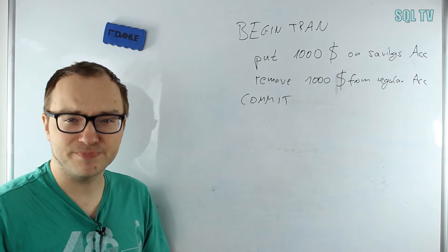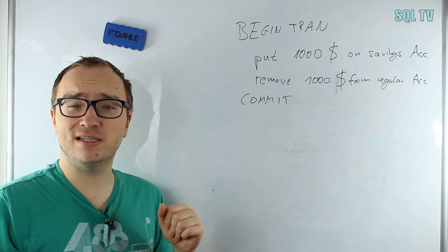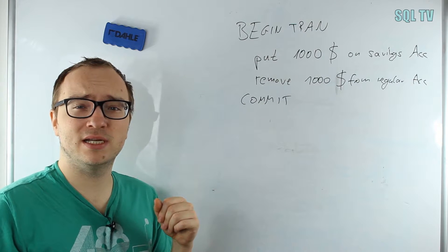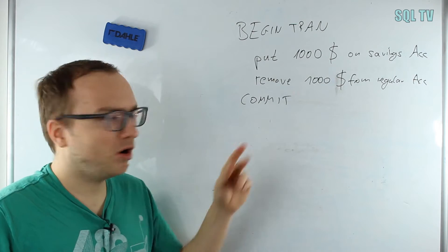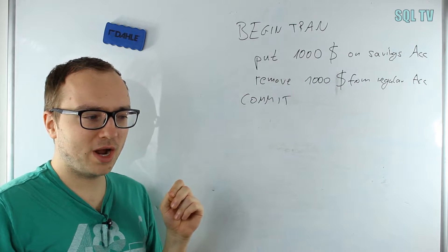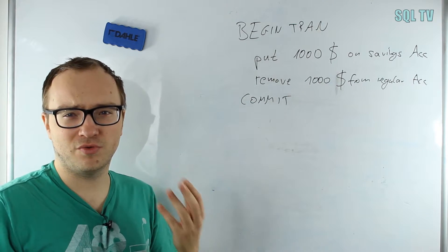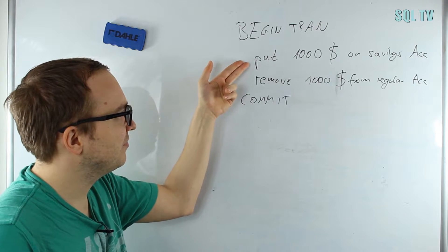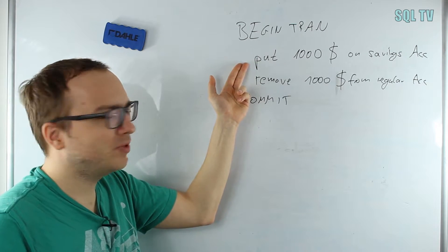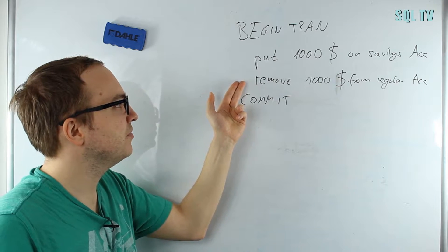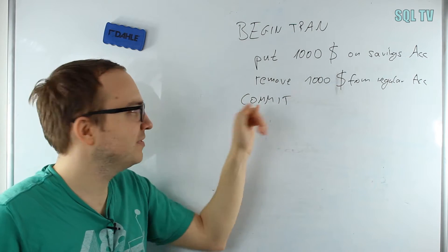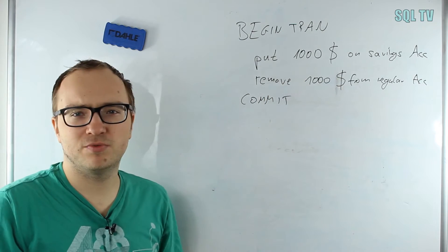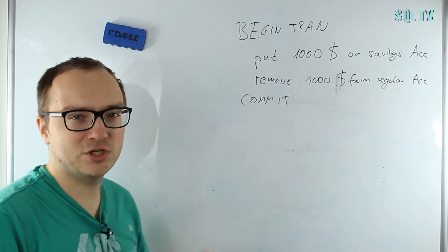Let's look at the first property: Atomicity. Atomicity means that all of the statements within a transaction go through, or they don't go through. We cannot have only the put statement go through without the remove. Either everything goes through or everything fails. If one statement fails, everything in this transaction never actually happened to the database. It's called a rollback then.